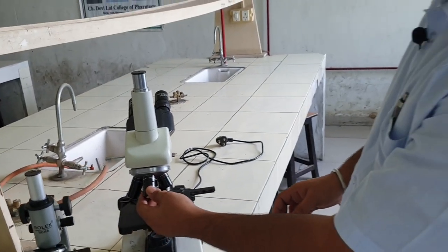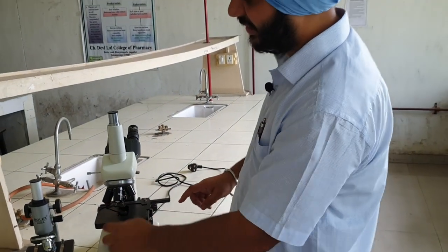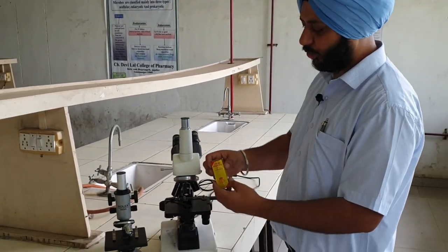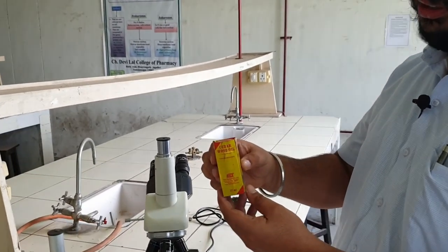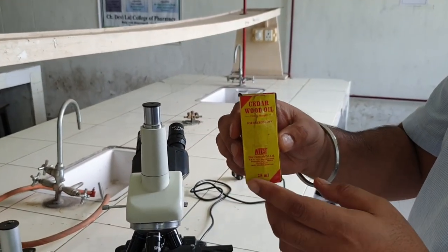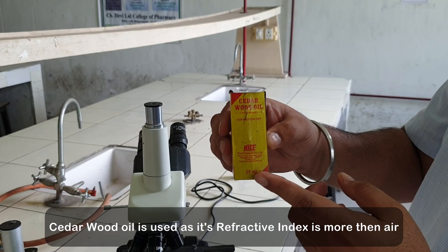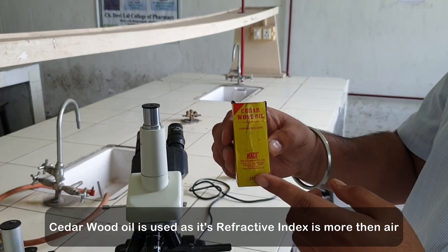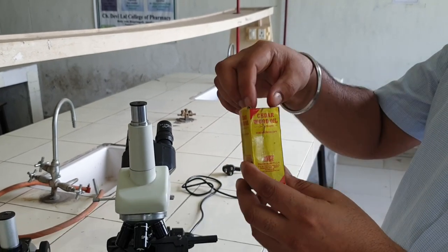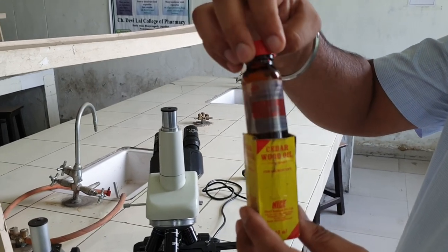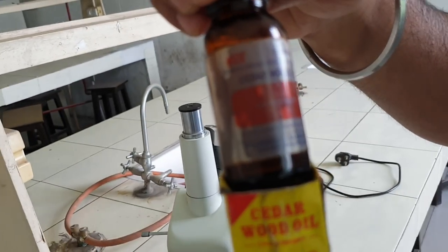The objective lens of 100x requires a special oil. It's called cedar wood oil. We have to put a drop of cedar wood oil on the slide. This is cedar wood oil, it is obtained from cedar wood.